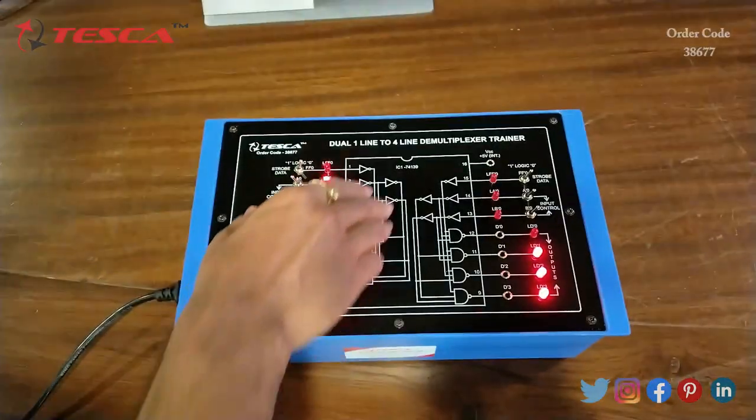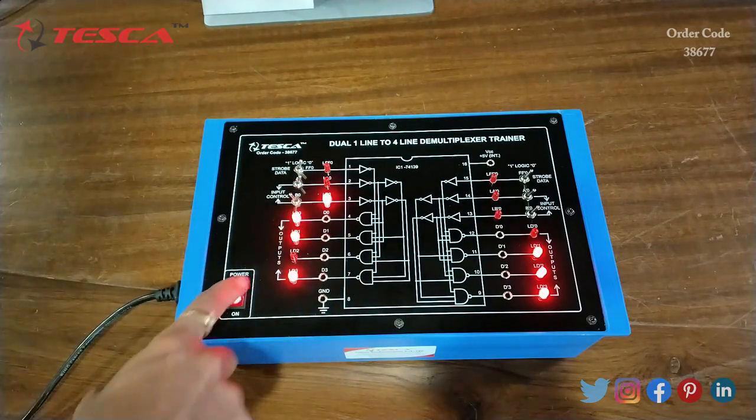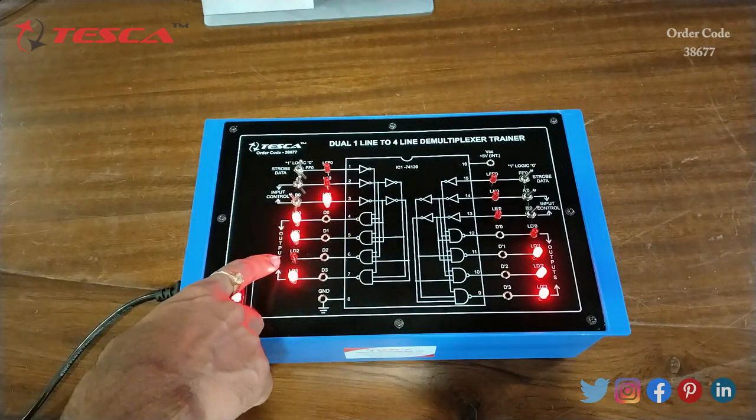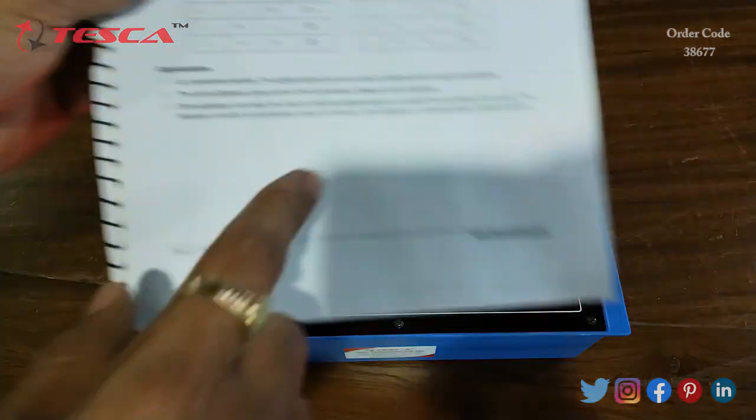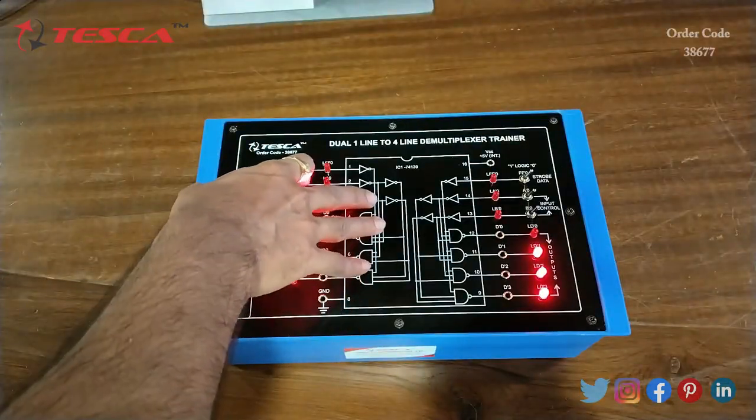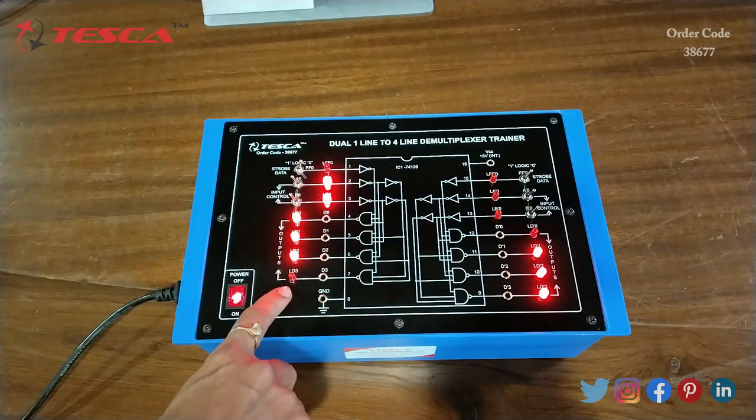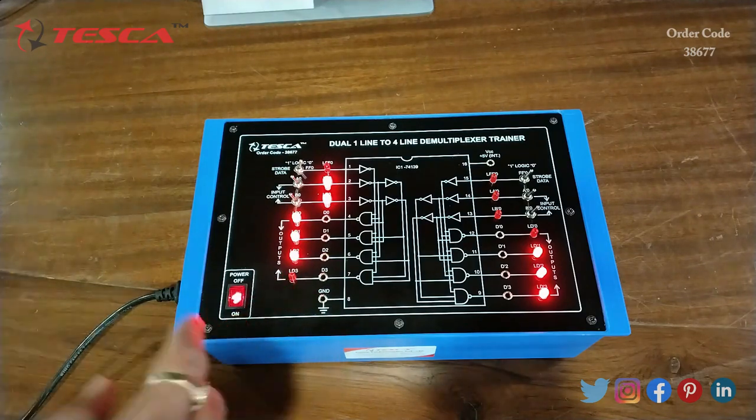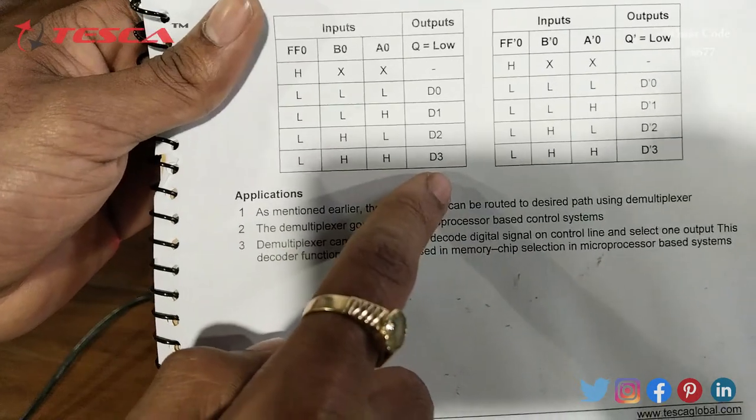When we give high input at B0 while keeping FF0 and A0 low, we get low output at D2 as mentioned in the manual. When we keep A0 and B0 high, we get low output at D3.